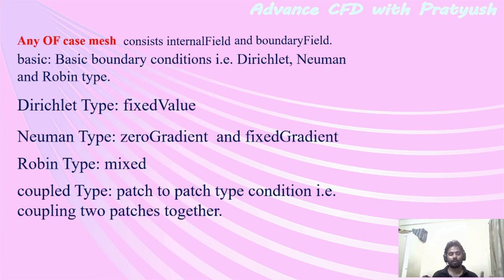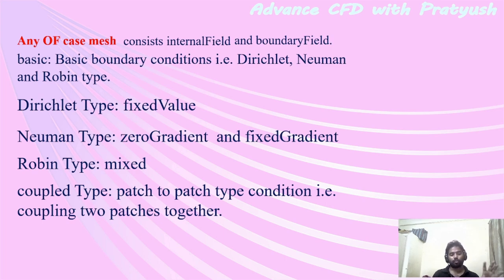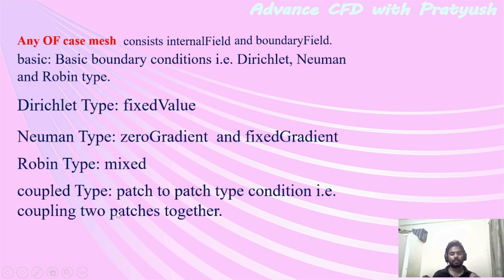Whenever you apply the Dirichlet or Neumann type of boundary condition or Robin type, these can be found in the basic folder of OpenFOAM. Dirichlet type means you are providing some fixed value. Neumann type means you are specifying a zero gradient or some fixed gradient. Robin means the mix of Dirichlet and Neumann — for example, conductive heat transfer equal to convection heat transfer. One side you apply a gradient value and the other side you give a fixed value — that is a mixed type.